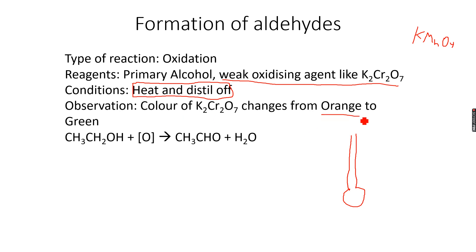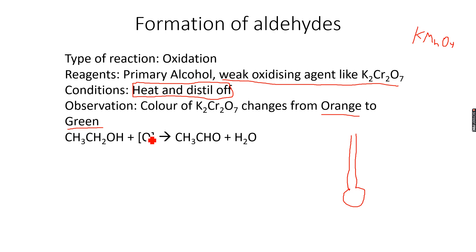Potassium dichromate is initially orange, but once the oxidation reaction happens, the color changes to green. The reaction taking place uses the bracket O notation for the oxidizing agent. So instead of writing K2Cr2O7, we will use bracket O.